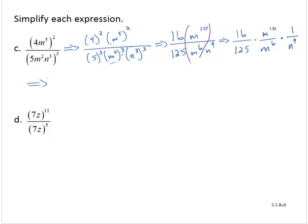16 over 125 has no common factors, so I'll leave that alone. Using the quotient rule, m to the tenth over m to the sixth gives m to the fourth, and I still have one over n to the ninth. Writing m to the fourth as m to the fourth over one, I can combine everything into one fraction: 16m to the fourth, over 125 n to the ninth.